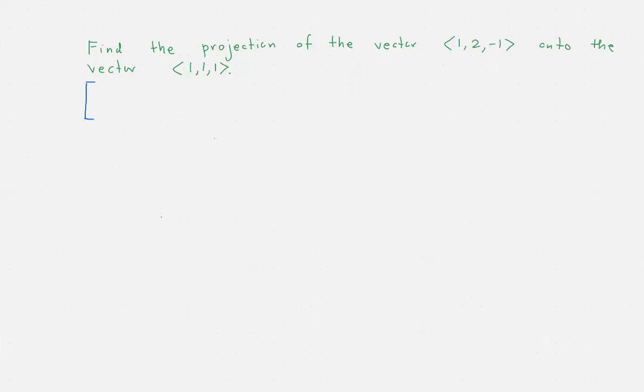Okay, so we would like to find the projection of the vector <1, 2, -1> onto the vector <1, 1, 1>.